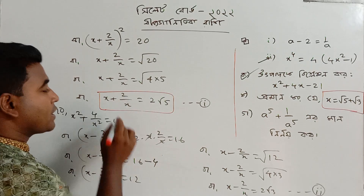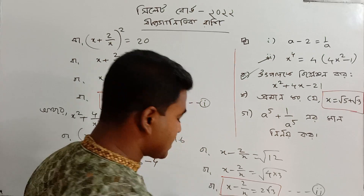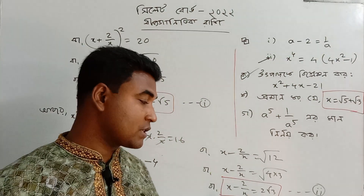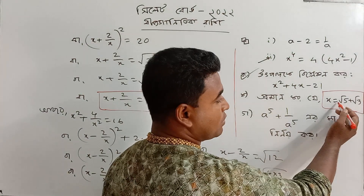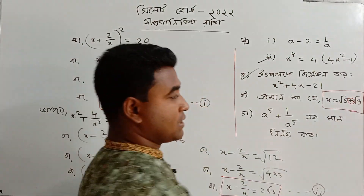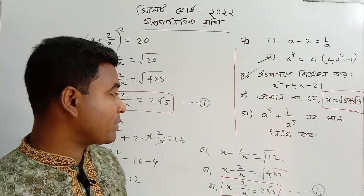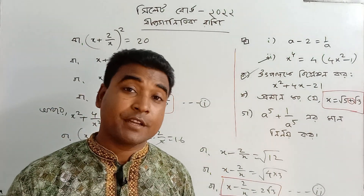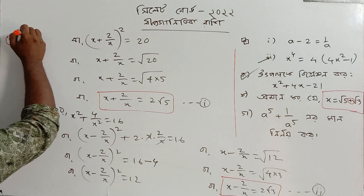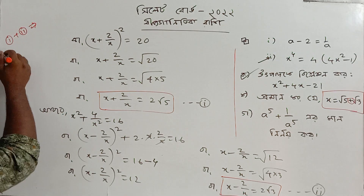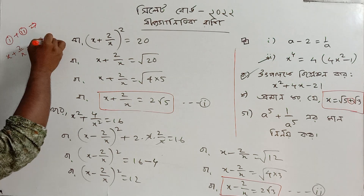The two numbers give us: x plus 2 by x equals √5, and x minus 2 by x equals √3, so those are the two results from the two equations.